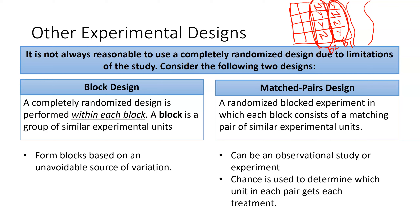The other way to have a matched pairs design is when each individual acts as his or her own control — having a pre-measurement and a post-measurement. Think of a weight loss program: everyone enters at a given weight, and the interest is in how much weight was lost. The difference between ending weight and beginning weight would be the matched pairs design.